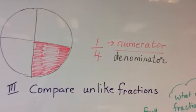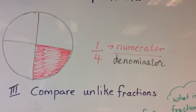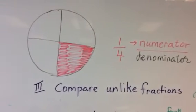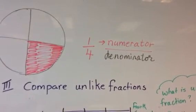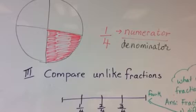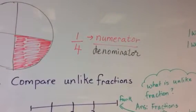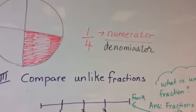One is the numerator, the part that is shown in red, and altogether, how many parts does it have? Four parts. The four parts is the denominator. And that is how a fraction is written. It's not a whole number, it's a part of the whole.